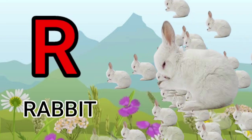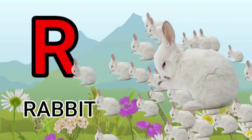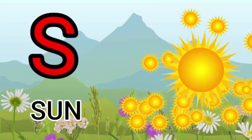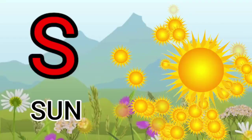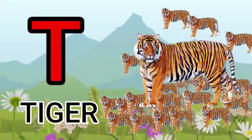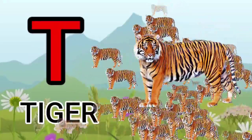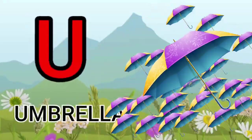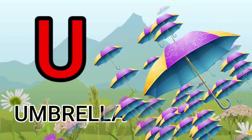R for rabbit, S for sun, T for tiger, U for umbrella.